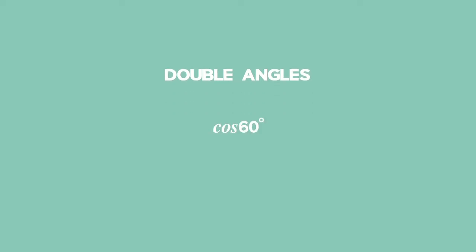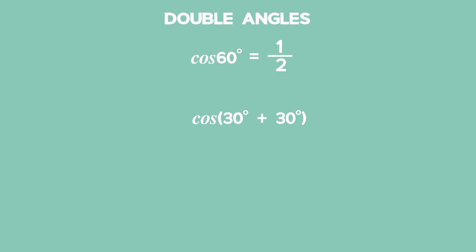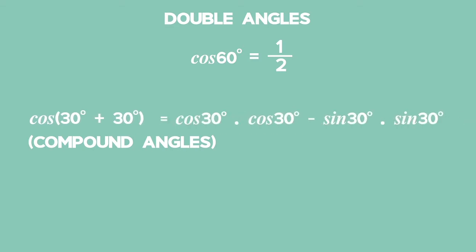From previous work on special angles, you will recall that cos 60 degrees is equal to a half. But cos 60 degrees can also be written as cos(30 degrees plus 30 degrees). Using compound angles, we get this is equal to cos 30 degrees times cos 30 degrees minus sin 30 degrees times sin 30 degrees.